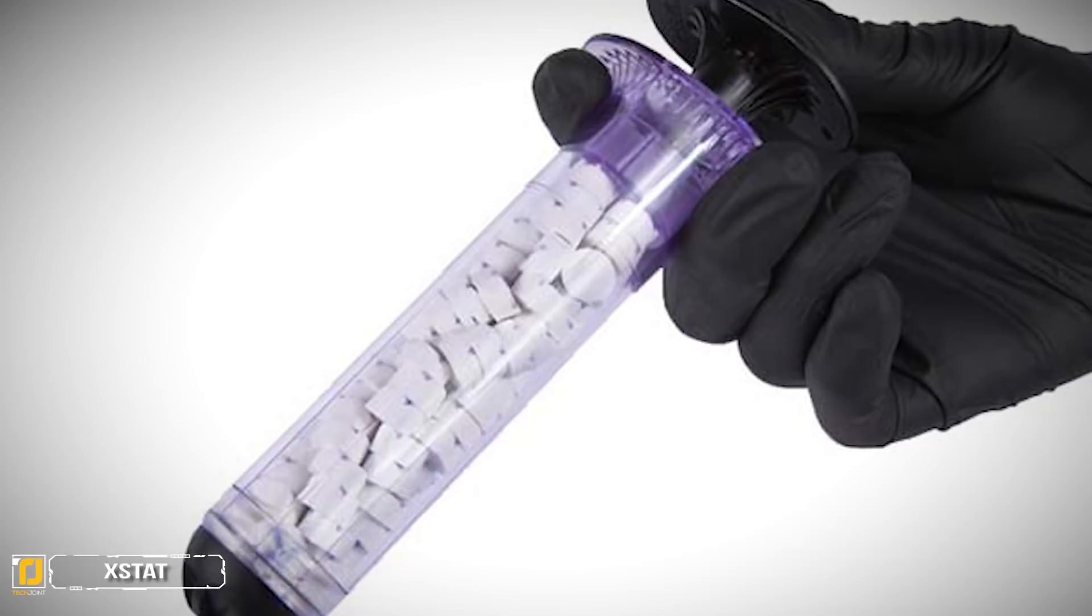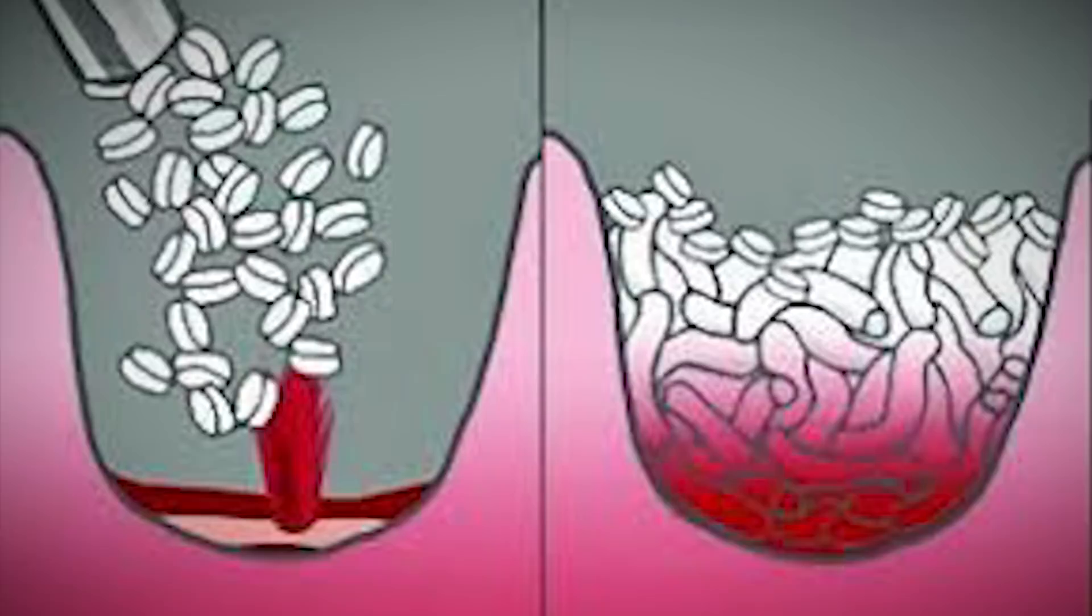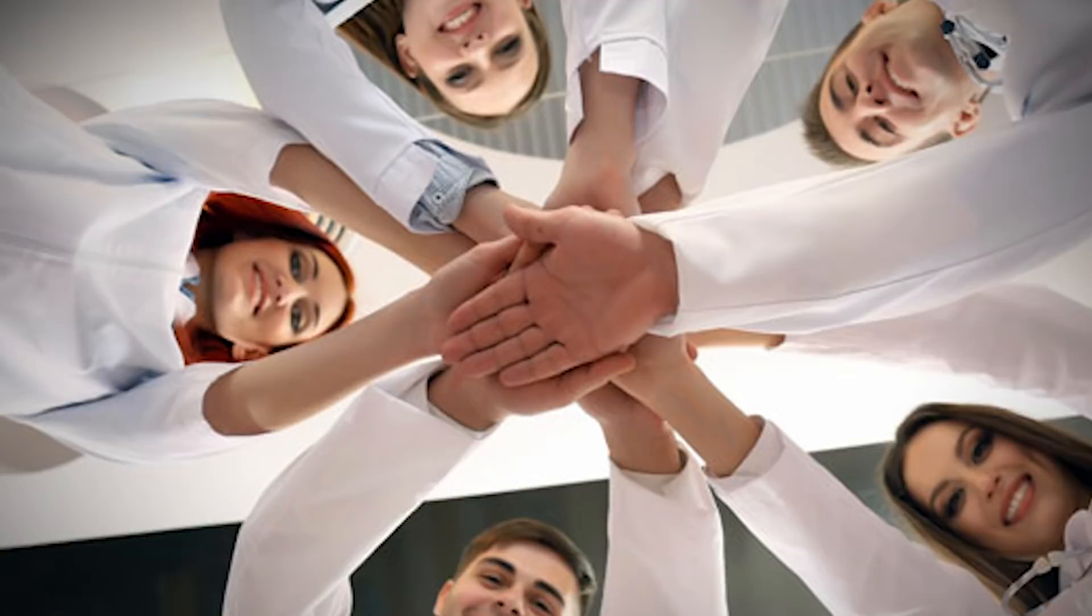Number 1. X-Stat. It's time to repack your first aid kit. The FDA has just approved the Better Band-Aid. This invention has been tested on battlefields but may now save someone's life at home. Produced by a medical company in Oregon, the X-Stat is a syringe-like device that injects tiny, super-absorbing material into wounds to stop bleeding in 20 seconds or less.